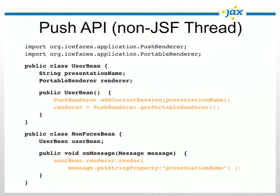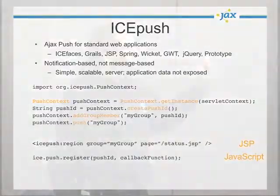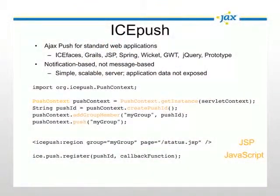That new feature is provided when you render using the push notification rather than just the group name. Sometimes you need to invoke a push but not from a JSF thread—for instance, a JMS message coming in should result in a push to all users. Before the JMS message arrives, you capture a portable renderer from the push renderer—an object you can pass around within your application and invoke. You can invoke render on it in the normal ICEpush fashion. That's what you'd use in an on-message callback from JMS.